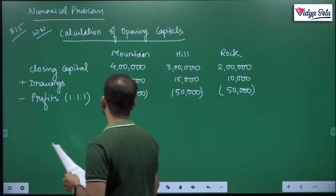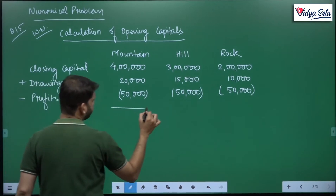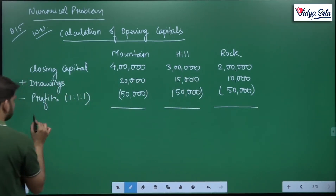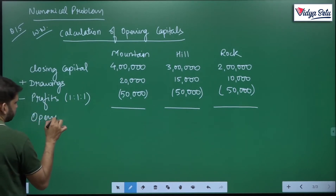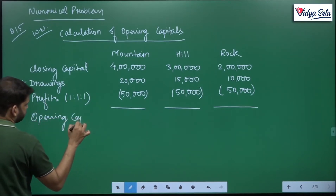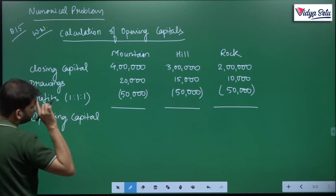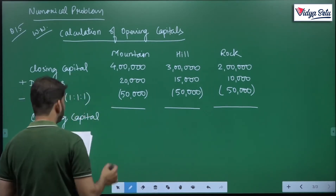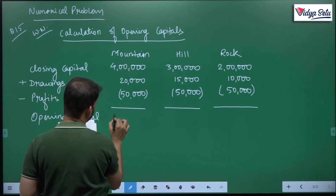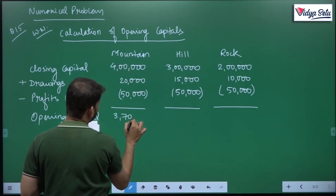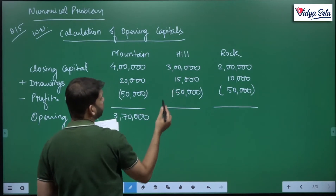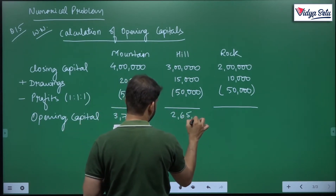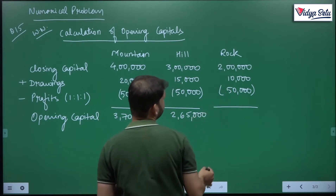There is no interest on drawings, otherwise we would have adjusted for that too. So it comes to: 4 lakh plus 20,000 minus 50,000 = 3 lakh 70,000; 3 lakh plus 15,000 minus 50,000 = 2 lakh 65,000; and the last one: 2 lakh plus 10,000 minus 50,000.